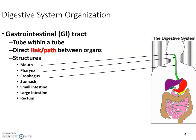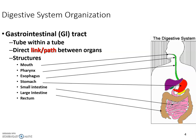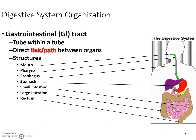The stomach is somewhat of a J-shaped structure where a lot of acids, enzymes, and natural bacteria are found that help with digestion. Students sometimes get the small and large intestine mixed up — think not about length but about diameter. The small intestine has a smaller diameter and the large intestine has a larger diameter; the large intestine is also where bowel will be created.